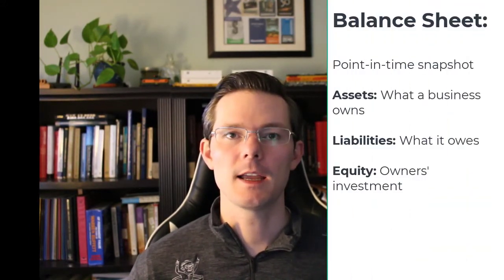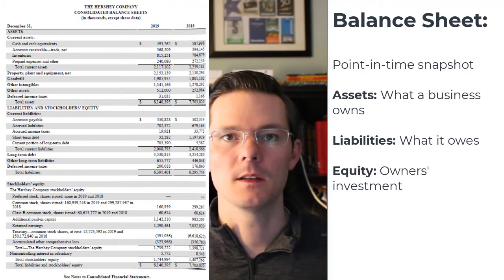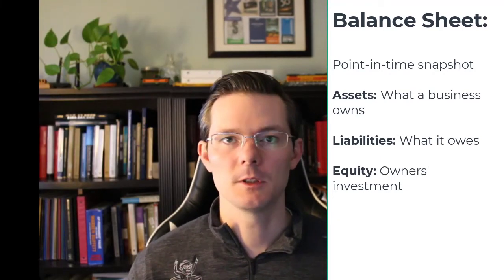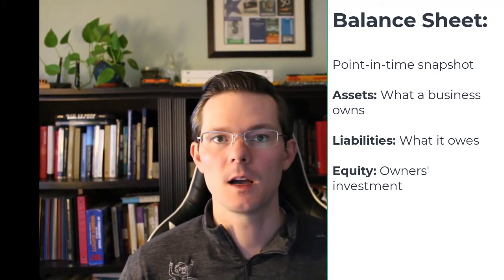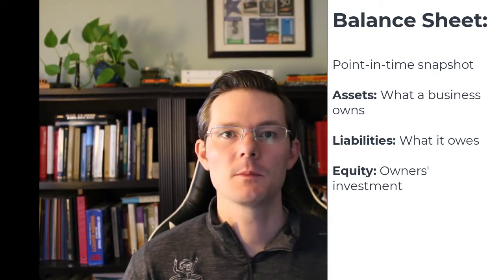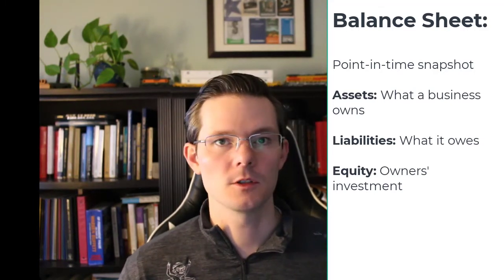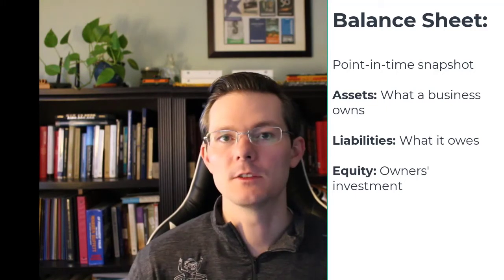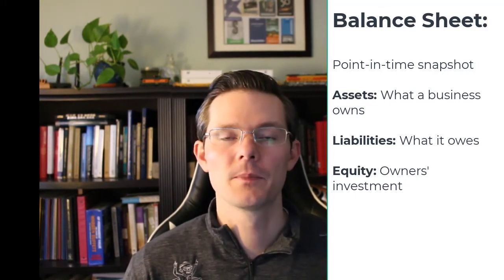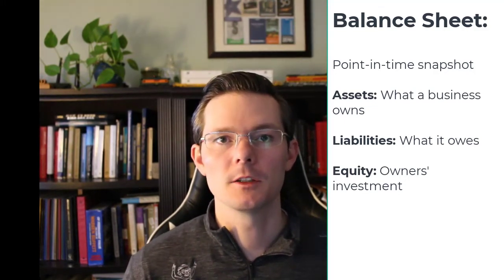Starting with the balance sheet — the balance sheet is simply a snapshot, a point in time. This statement is basically, literally, stopping the business. In some cases with inventories they literally stop and count. But it's really a snapshot in time. It's a picture of the assets — what the business owns — its liabilities, generally what it owes whether that's debt or to others, and what it owes to shareholders on the equity side of the balance sheet.